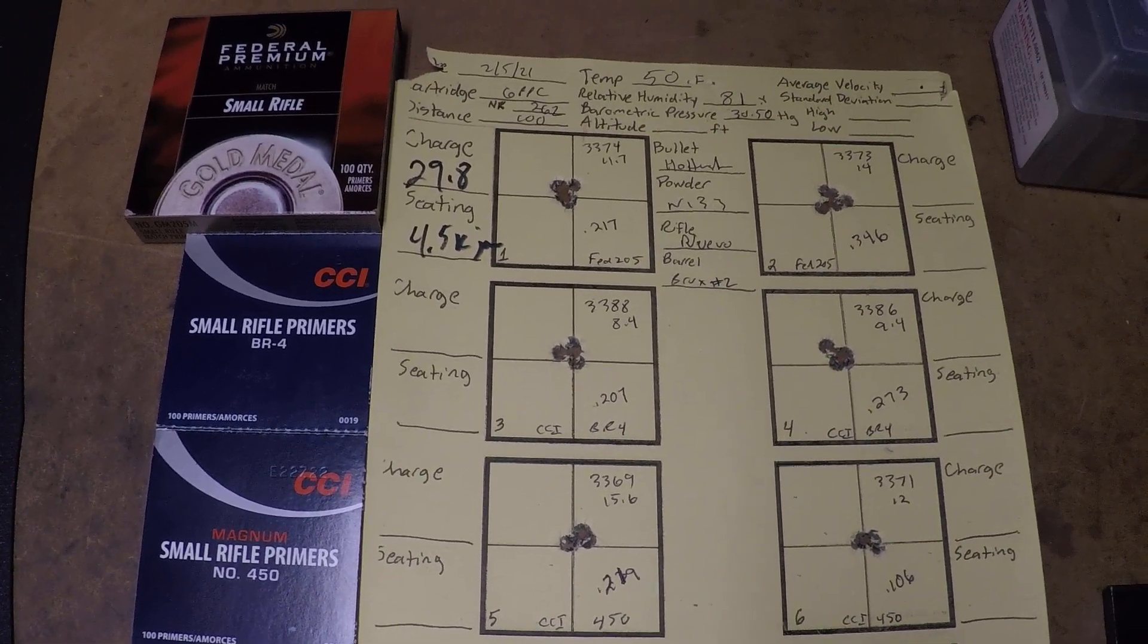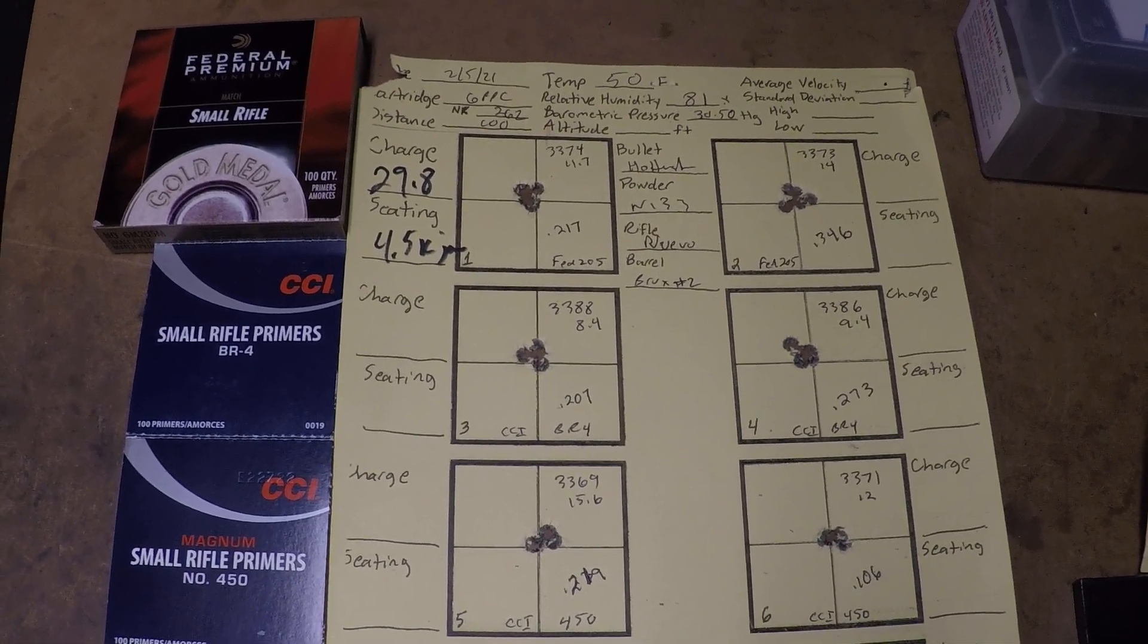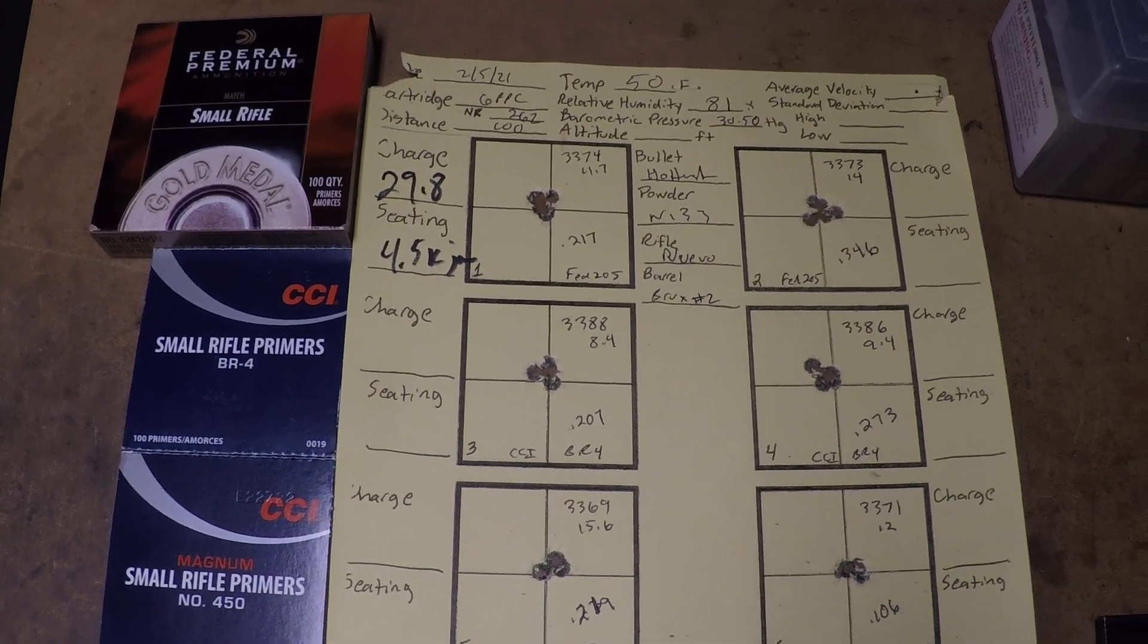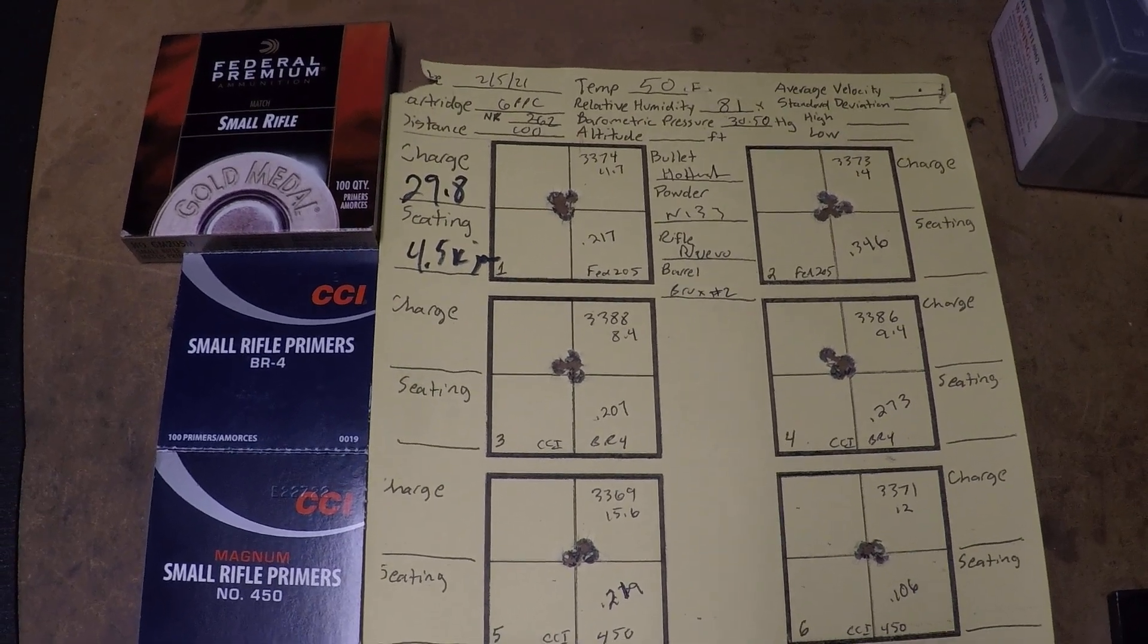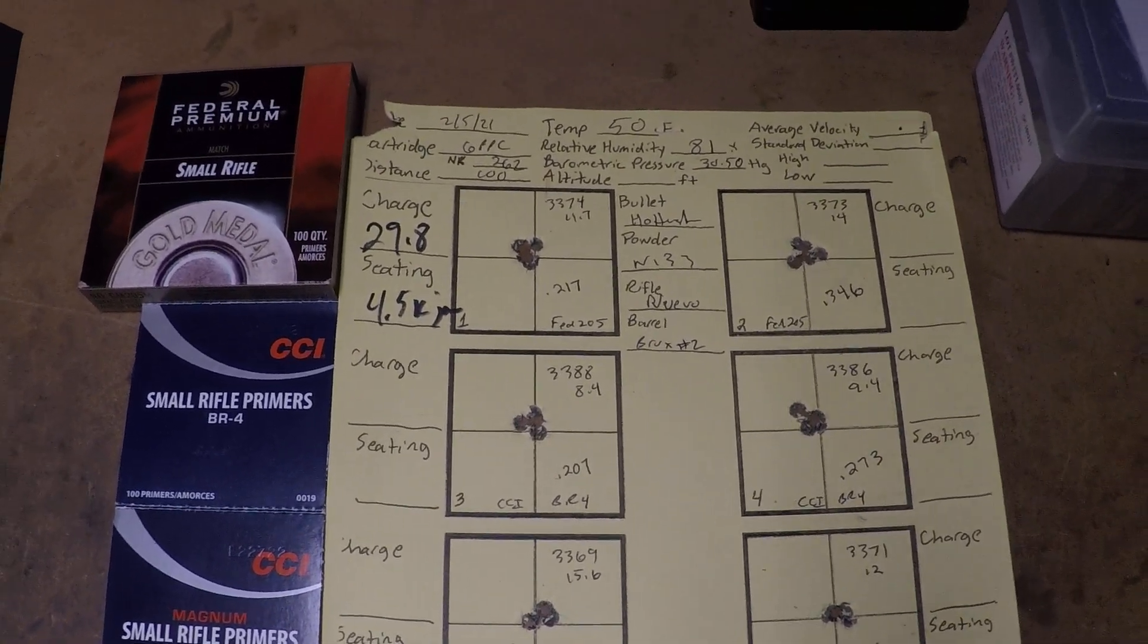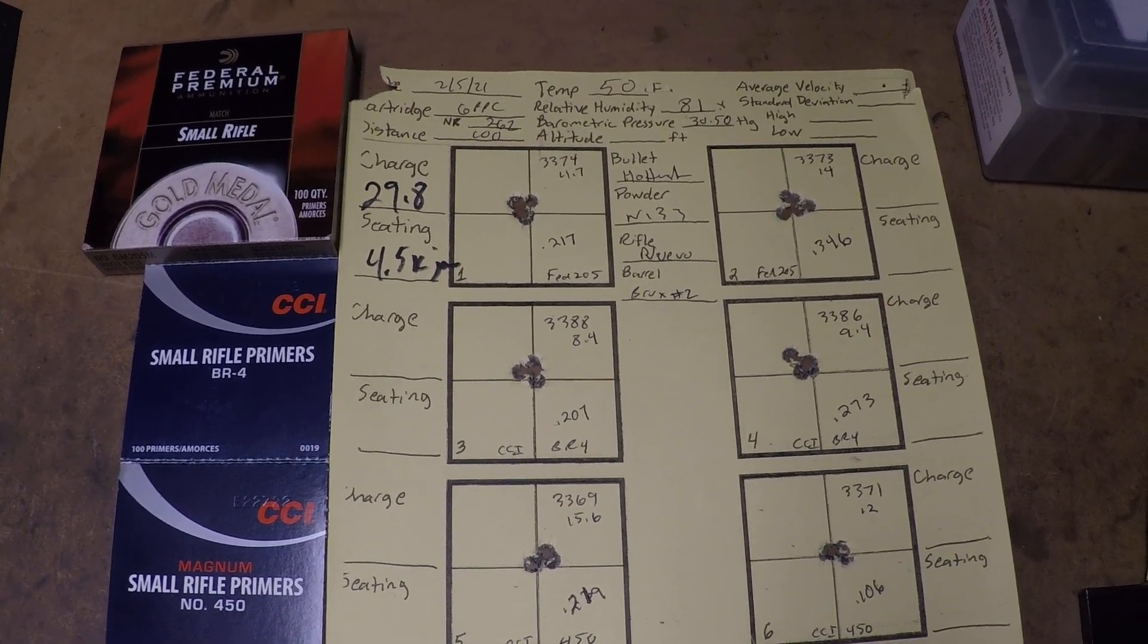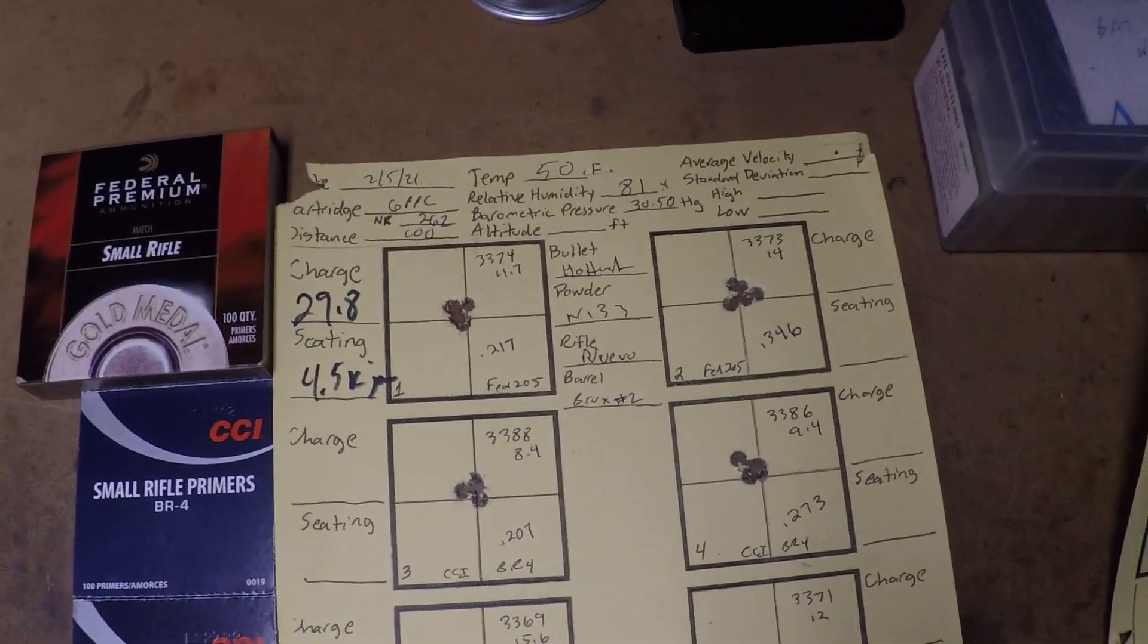It's noted, though, that 29.8 was not the ideal charge for the Federal 205Ms, which are the primers that I usually use. So, the groups I expected to grow a little bit with that charge and with Federal 205M, but I was curious to see how much difference is there going to be in the velocity and group size using these three different primers. So, let's dive into it.